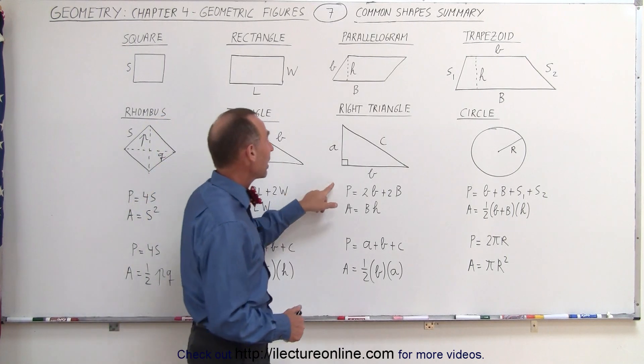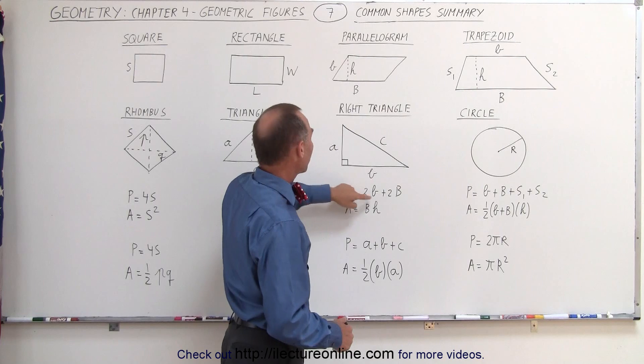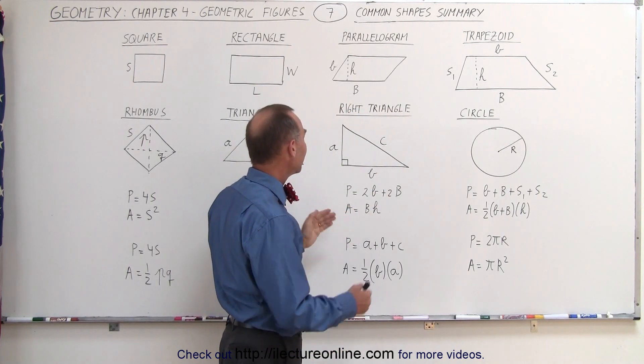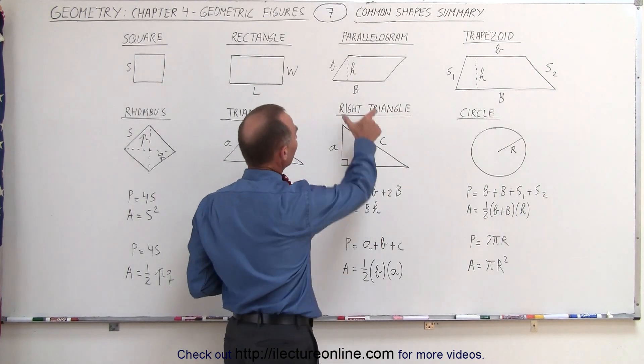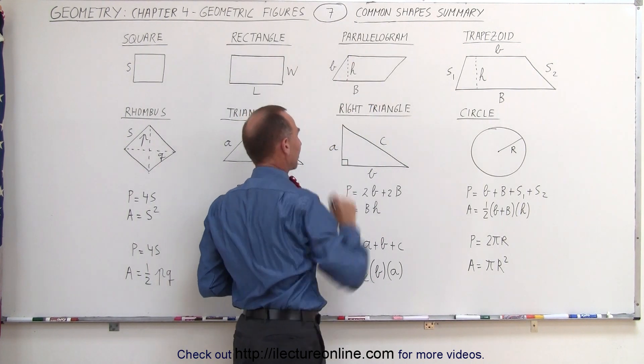For a parallelogram, the perimeter is twice the short side plus twice the long side. For the area, it's the base times the height, which means the length of the long side times the height.